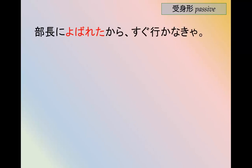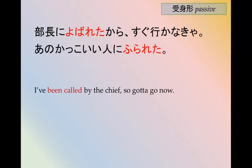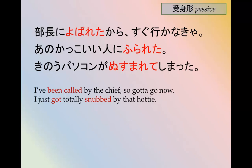Let's look at the passive, 受け身 in Japanese. Here are some examples. 部長に呼ばれたからすぐ行かなきゃ — I've been called by the department chief, so I have to go now. あのかっこいい人に振られた — I just got totally snubbed or dumped by that hottie. 昨日パソコンが盗まれてしまった — Yesterday my computer was stolen.